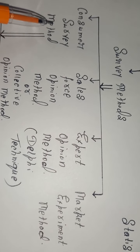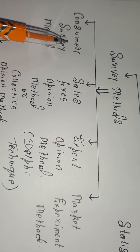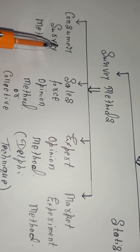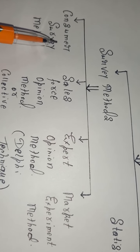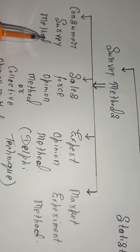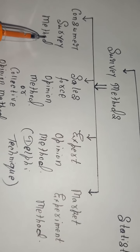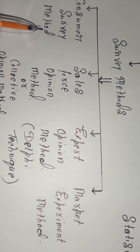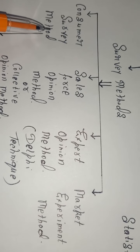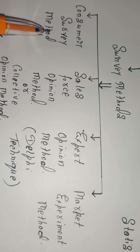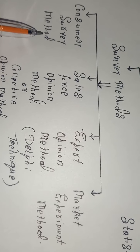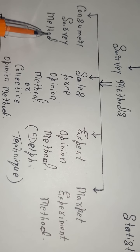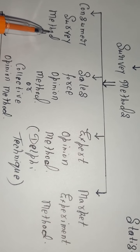The first is the consumer survey method. Here, the company focuses on the end consumers in the market. Different patterns are followed, such as interviews, questionnaires, and so on. A questionnaire is a set of questions prepared by the company and filled by different consumers in the market. When there is a demand for a product over a short period of time, this method is very useful for the company to know what consumers are trying to purchase in the near future and forecast demand accordingly.